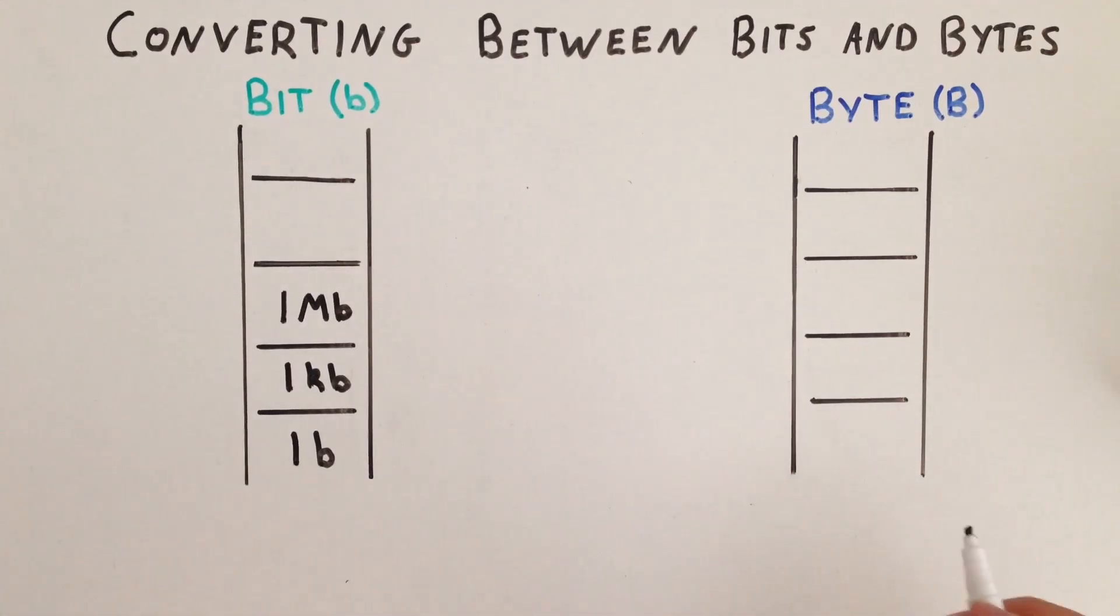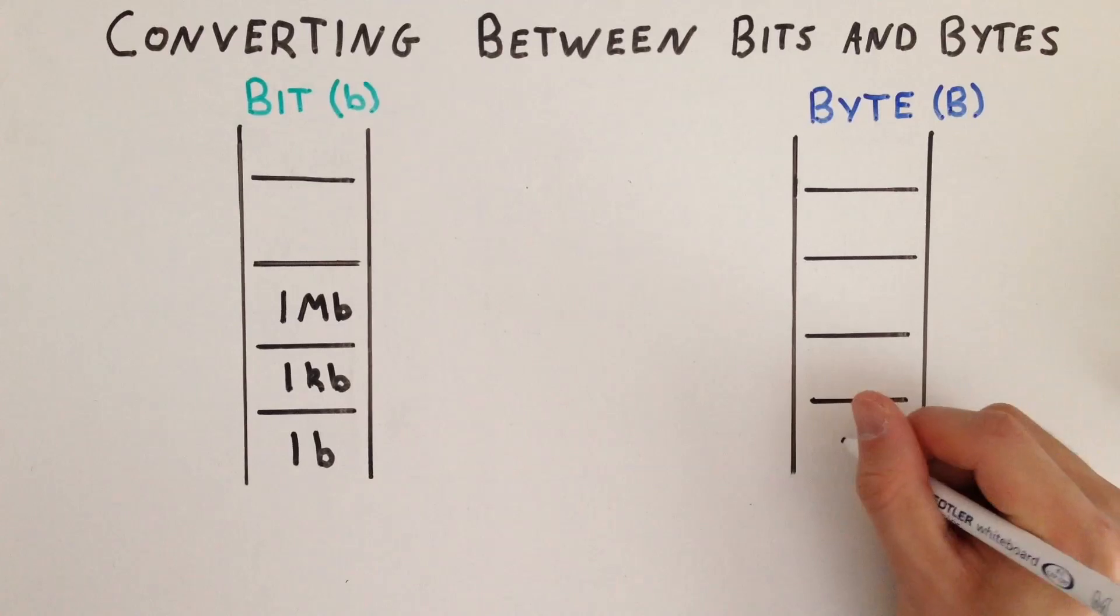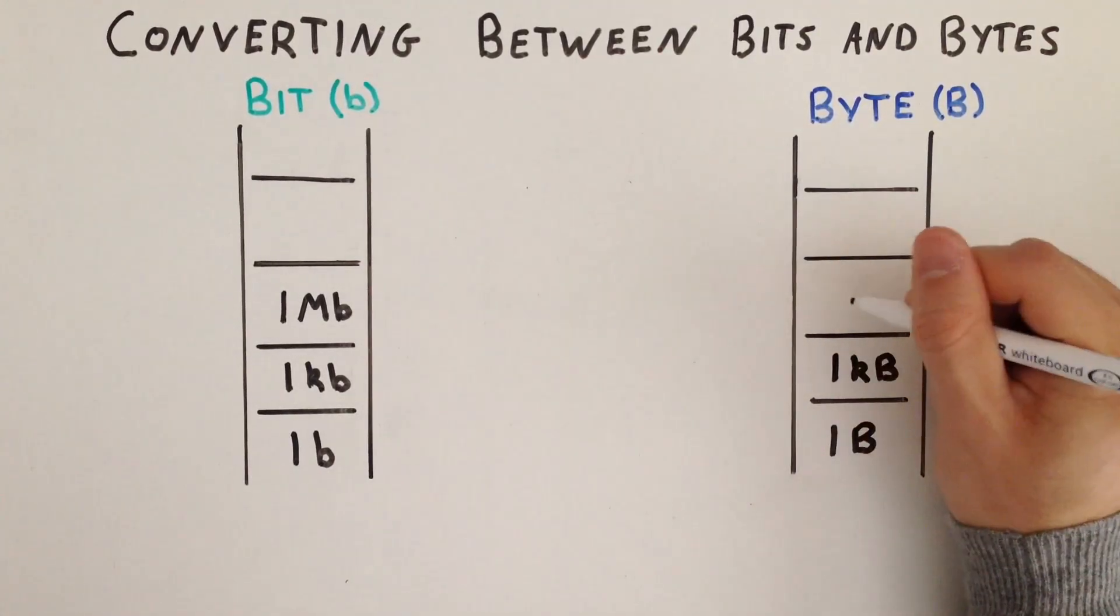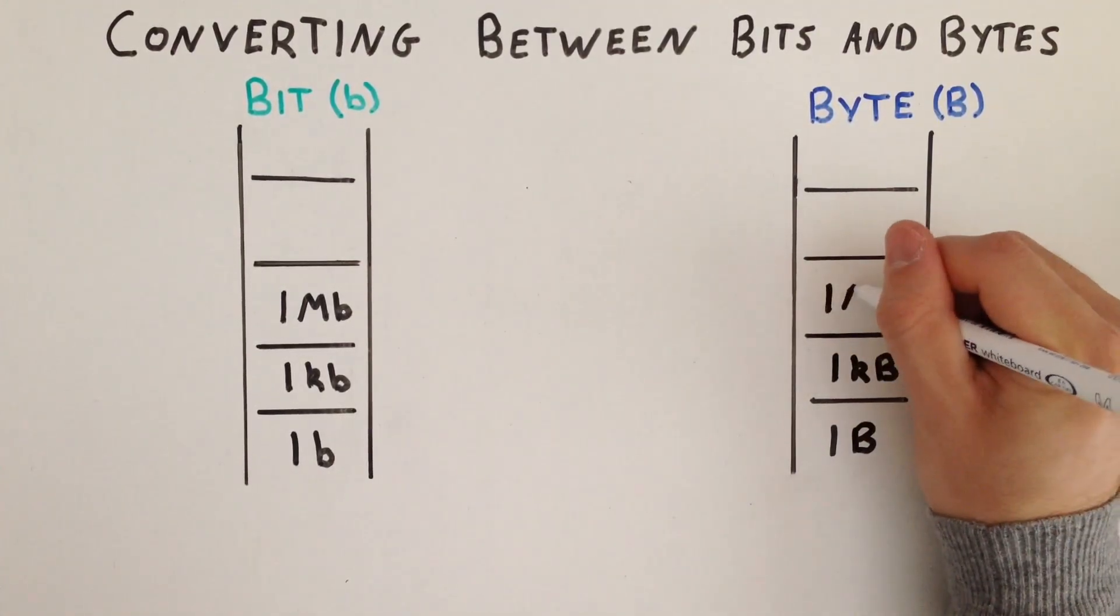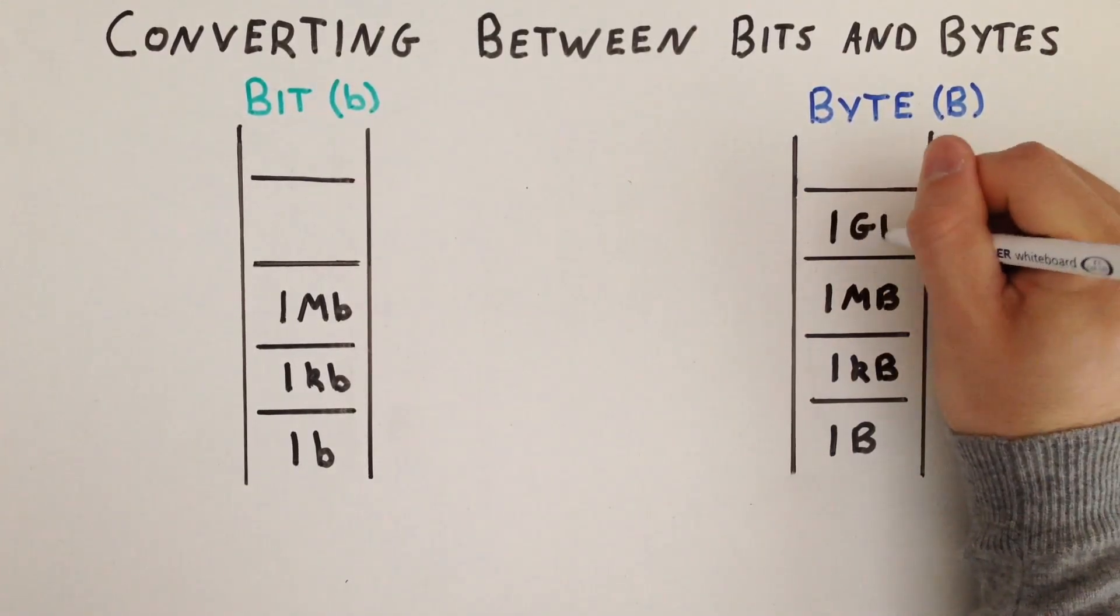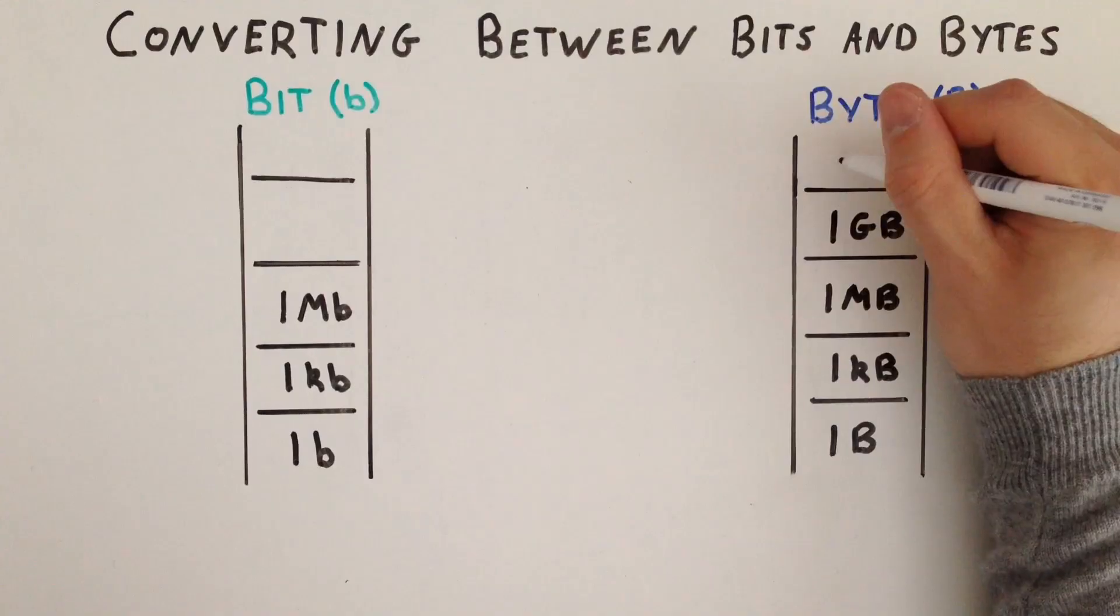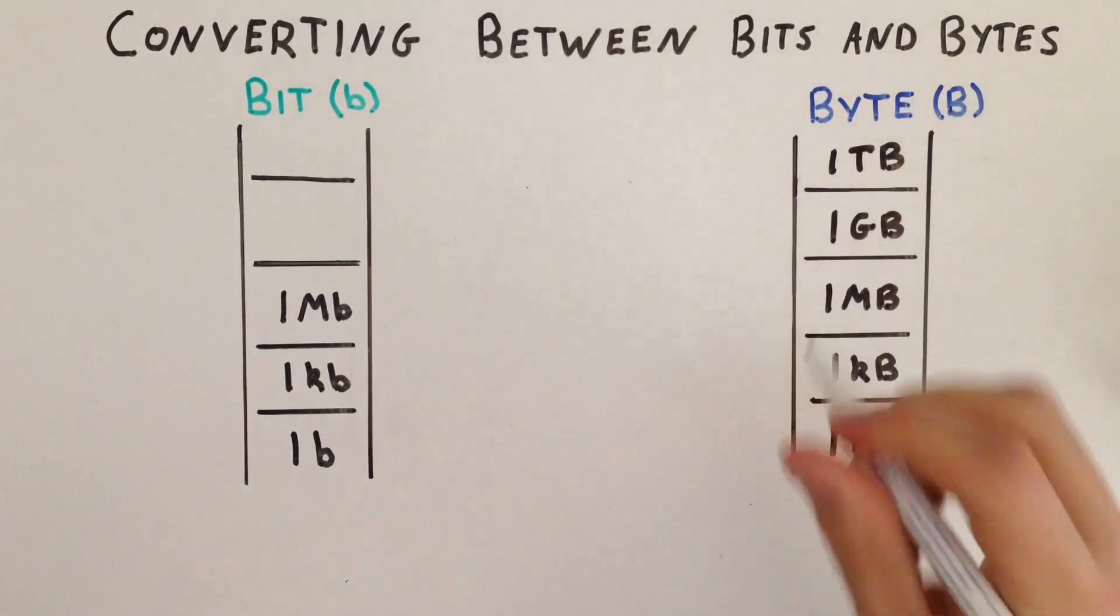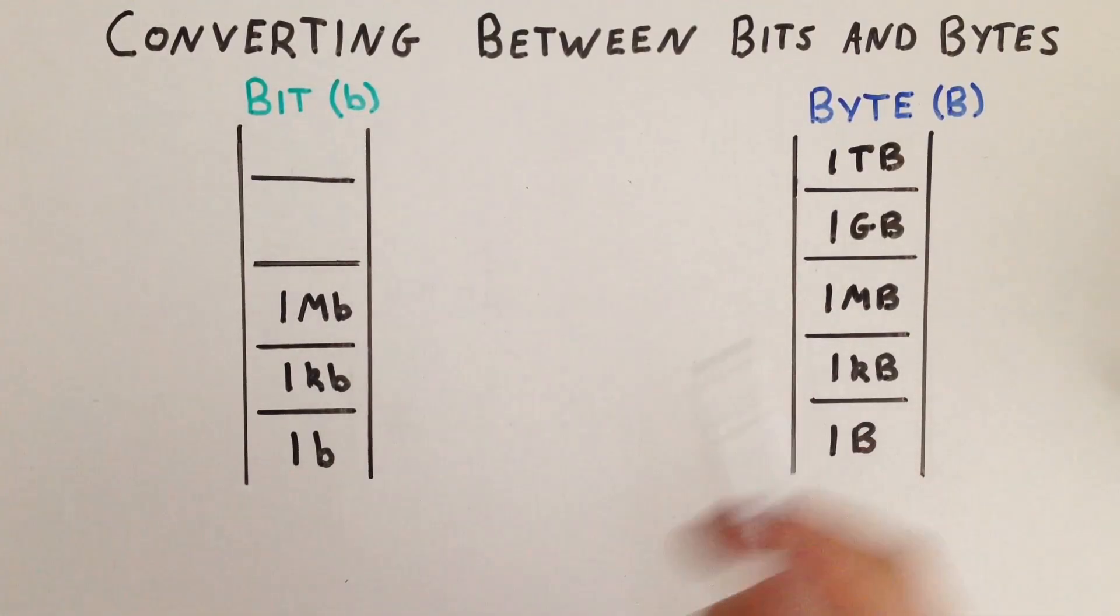Now let's do the byte ladder. At the base, the lowest level is one byte, one capital B. Next level up is one kilobyte. Then another level up, one megabyte. Up again is one gigabyte, and higher than that is one terabyte. There are a few more levels higher than a terabyte, but that will do for now.